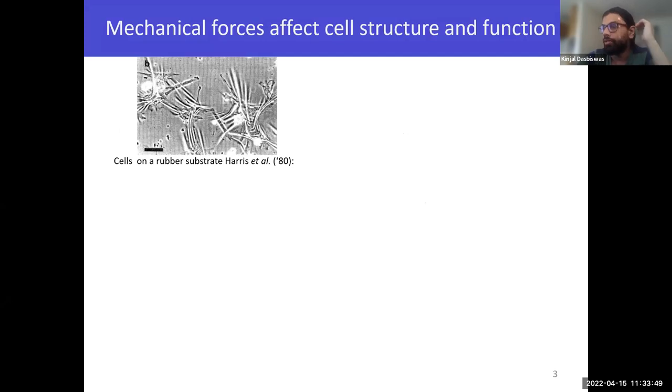One of the pioneering experiments in this field of mechanobiology comes from Stopak and Harris from the 1980s, which is somewhat prehistoric in terms of the history of this very new field. What they did was culture cells on top of a thin rubber sheet and showed that cells actually exert forces on their surroundings and deform and wrinkle this rubber sheet. At the time, this did not receive much attention from biologists because it seemed kind of obvious. Cells do need to exert forces to do some functions like migrate or change their shape, such as during cell division. In some cases, it's very important, like muscle contraction.